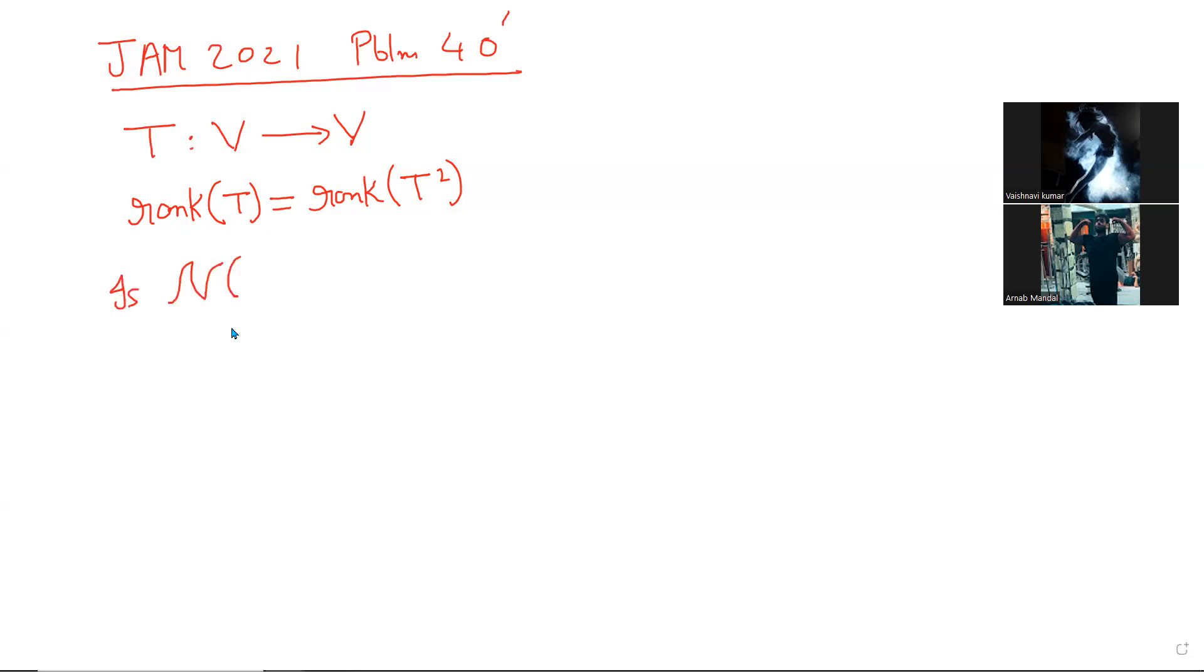I'm using the standard linear algebra notation for null space. The question is: null space of T equals null space of T square. Is this true or false? If anything is not clear, then you should ask me.